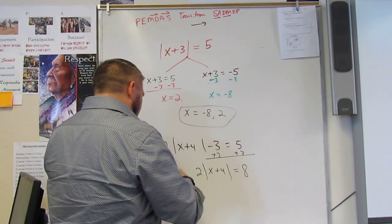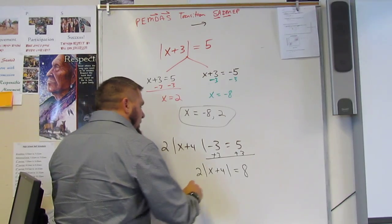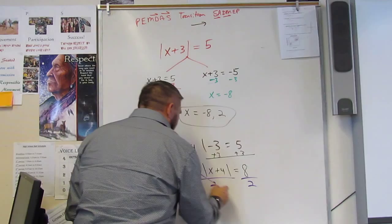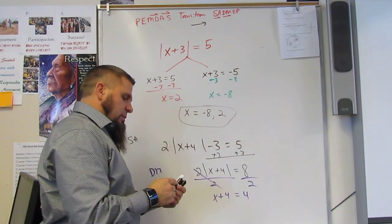And then I've got to divide by 2. It's still SADMEP, DM. So I'm going to divide by 2 and divide by 2. And that cancels that out. So I get x plus 4 equals 4.